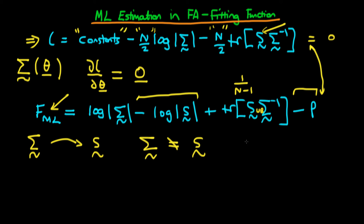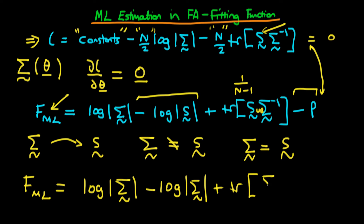But we can think about what would happen if there was a perfect fit. If Σ actually equaled S, what would F_ML equal? We'd have log|Σ| minus log|Σ| (because I've replaced S by Σ) plus the trace of Σ times Σ^(-1), and then finally minus p.